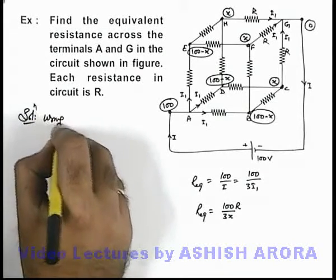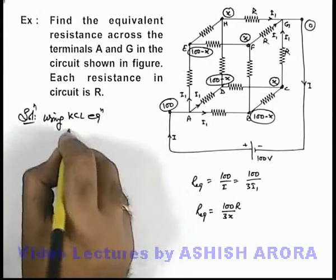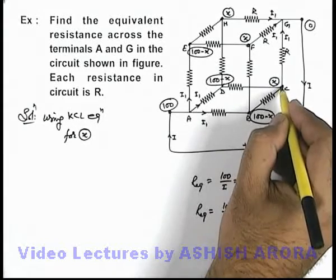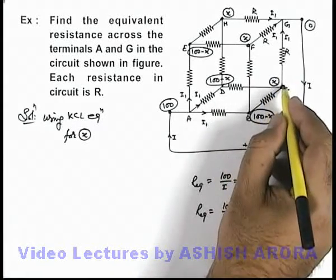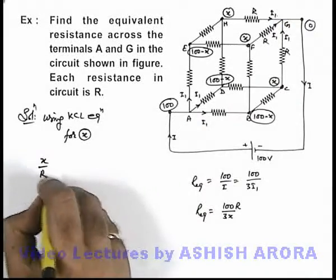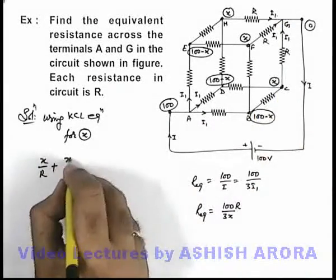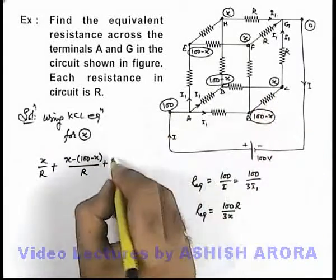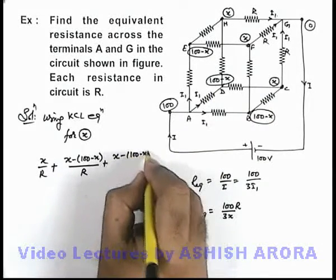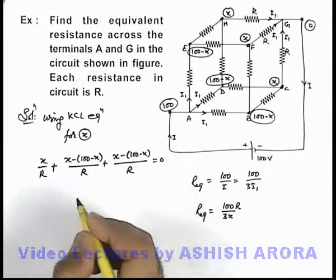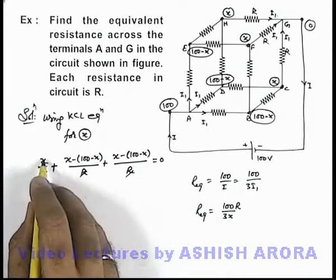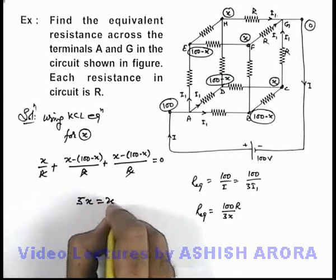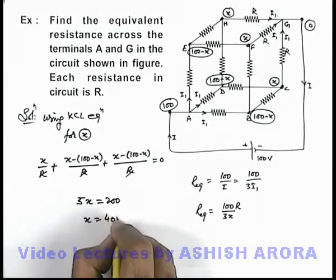By using KCL equation for x. So here if you write the KCL equation for any junction where potential is x, you can see the outgoing 3 currents we can write as, this is x minus zero by R, plus the current in this direction it'll be x minus of 100 minus x by R. This should be equal to zero. Here R gets cancelled out. And this'll be totally 5x is equal to 200. On solving we get x is equal to 40 volt.